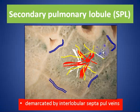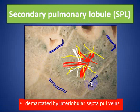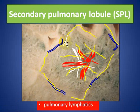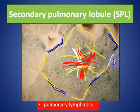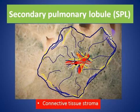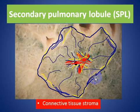We have the pulmonary veins surrounding the periphery of the secondary pulmonary lobule. Also we have the pulmonary artery and lymphatics surrounding the pulmonary lobule on the periphery, and we have the connective tissue stroma surrounding the periphery of the pulmonary lobule.